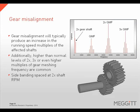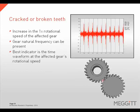Gear misalignment will produce an increase in running speed harmonics of the affected gears. Higher than normal levels of 2 times, 3 times, or even higher multiples of gear mesh frequency are common, with sidebanding spaced at 2 times the shaft's rotational speed. Cracked or broken gear teeth will increase the amplitude of the 1 times rotational speed vibration peak, and the gear's natural frequency can also be present; however, the best indicator of cracked or broken gear teeth is found in the waveform, with impacting spaced at the rotational speed of the damaged gear.